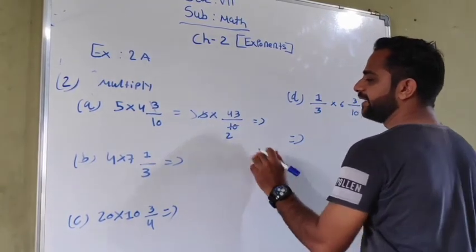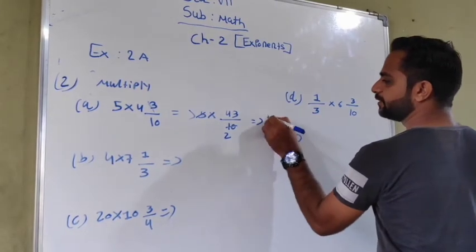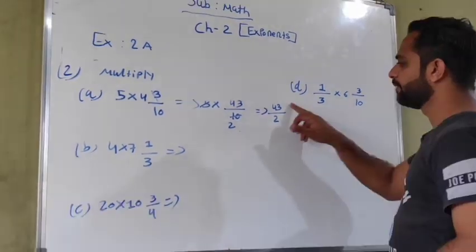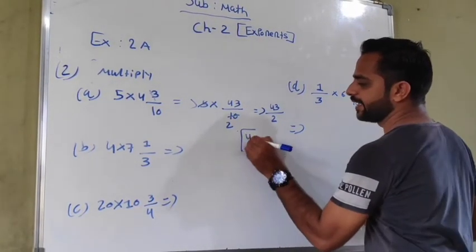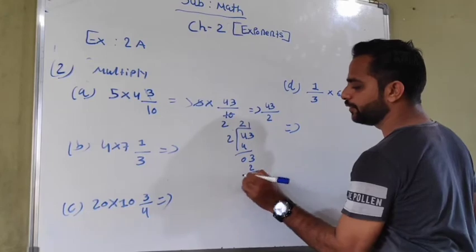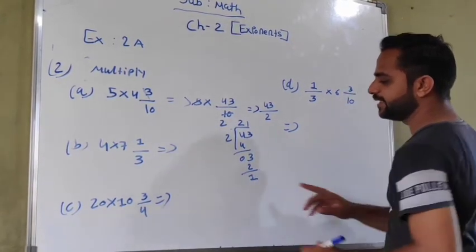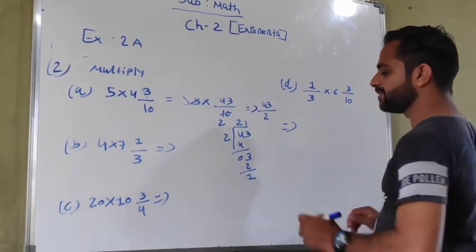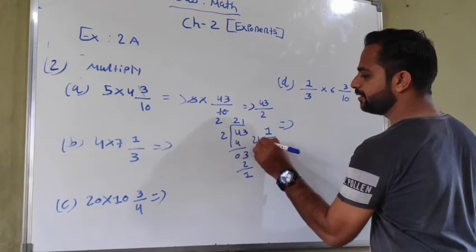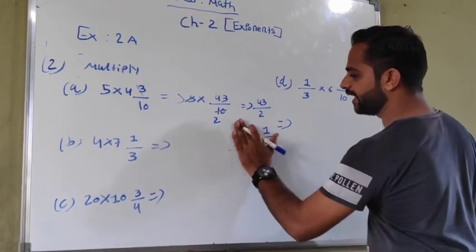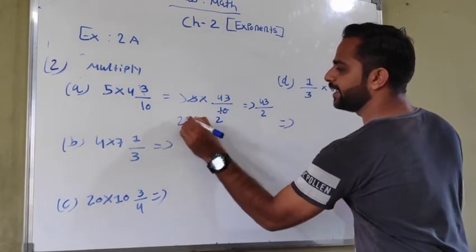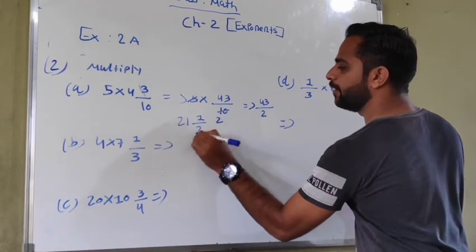If we divide 43 upon 2, 2 goes into 4 twice, remainder 0, then 2 into 3 once, remainder 1. So the remainder is 1, which gives us 21 and 1 upon 2. The answer is 21 and 1 upon 2.